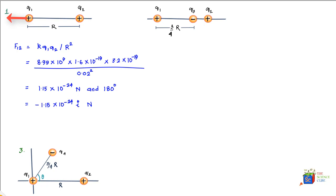In problem two, we've introduced another charge in between q1 and q2. By the superposition principle, the force on q1 due to q2 remains unchanged. All we need to do is find the force on q1 due to q3, then add it vectorially to the force from q2. Let's find the force on 1 due to 3.